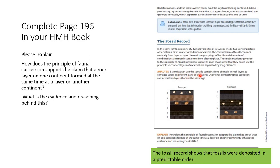In addition, scientists can use a specific combination of fossils and rock layers to correlate layers in different parts of the world. Draw lines connecting the European and Australian layers — all you have to do is draw lines connecting the layers that are equal, showing that the fossil determines the age of that rock. That means the age of this rock must be the same because that fossil existed at only one time in Earth's history, due to the predictable ordered fossil record. If you have further questions, please see your science teacher.